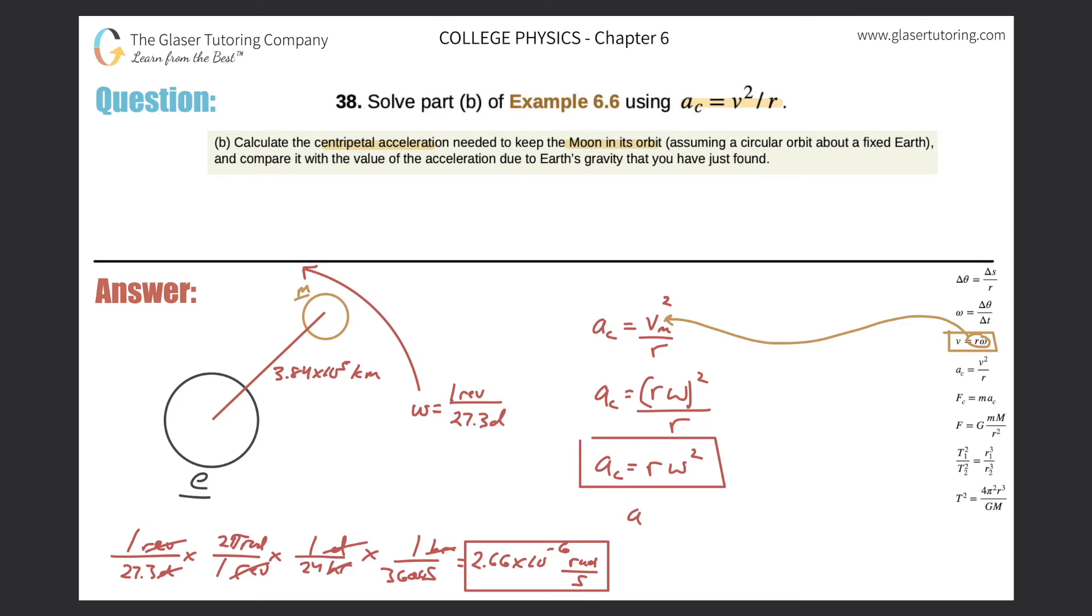So let's simply plug it in. So centripetal acceleration will be equal to the radius. Remember, the radius, here it is, but it has to be a meter. So simply just multiply this value by 3 or simply just add 3 to the exponent. So we get 3.84 times 10 to the eighth multiplied by now 2.66 times 10 to the minus 6. Remember, it's squared. So now all we have to simply do is calculate.